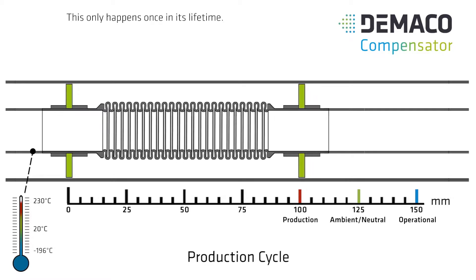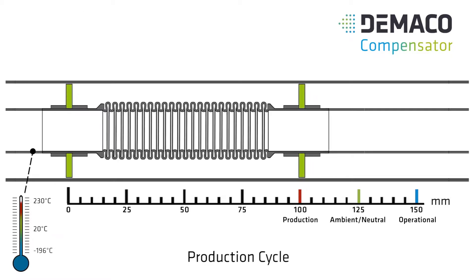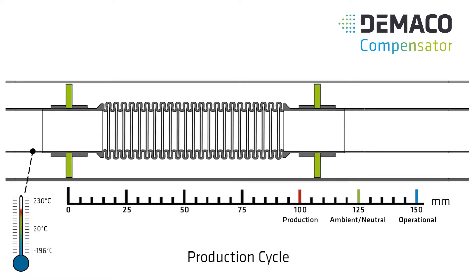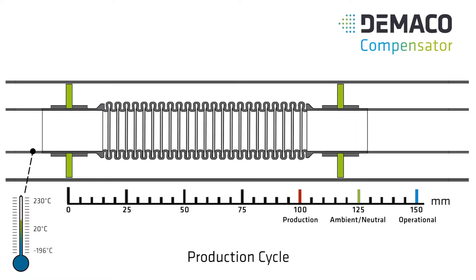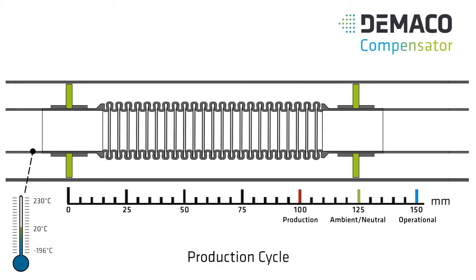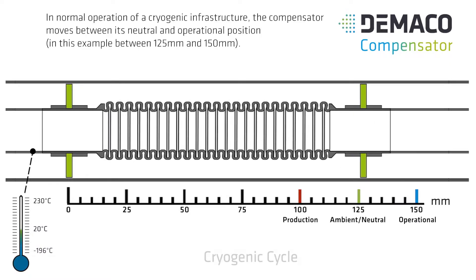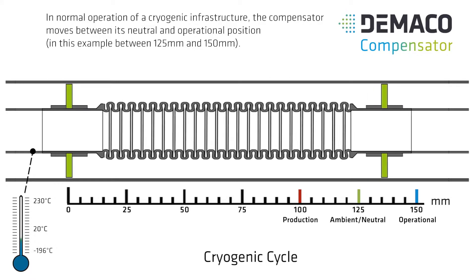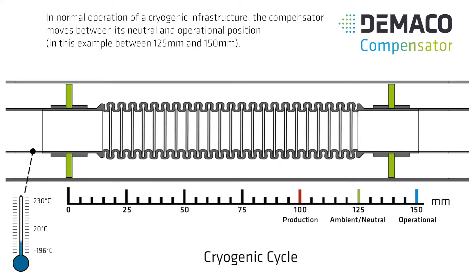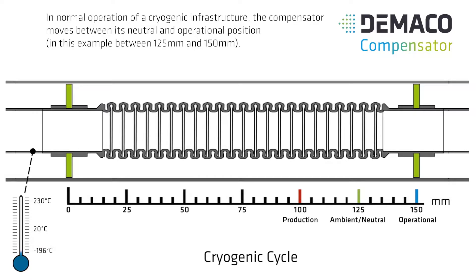This only happens once in its lifetime. In normal operation of a cryogenic infrastructure, the compensator moves between its neutral and operational position — in this example, between 125 and 150 mm.